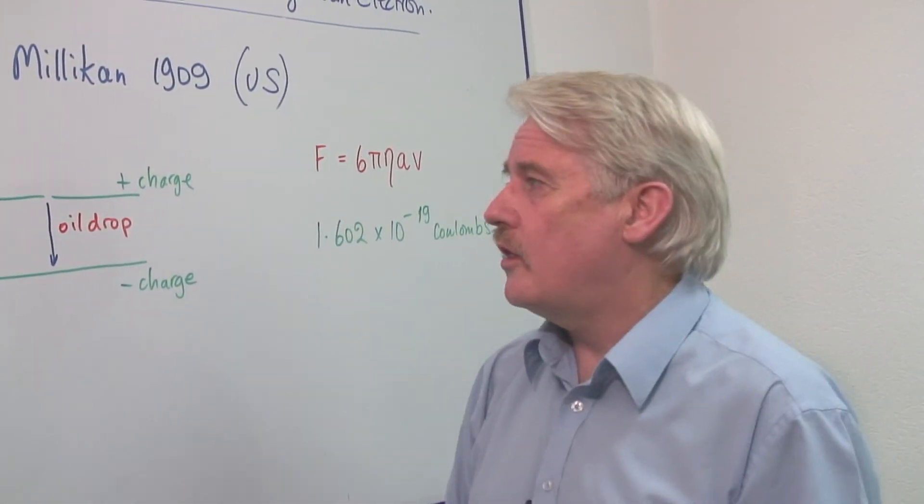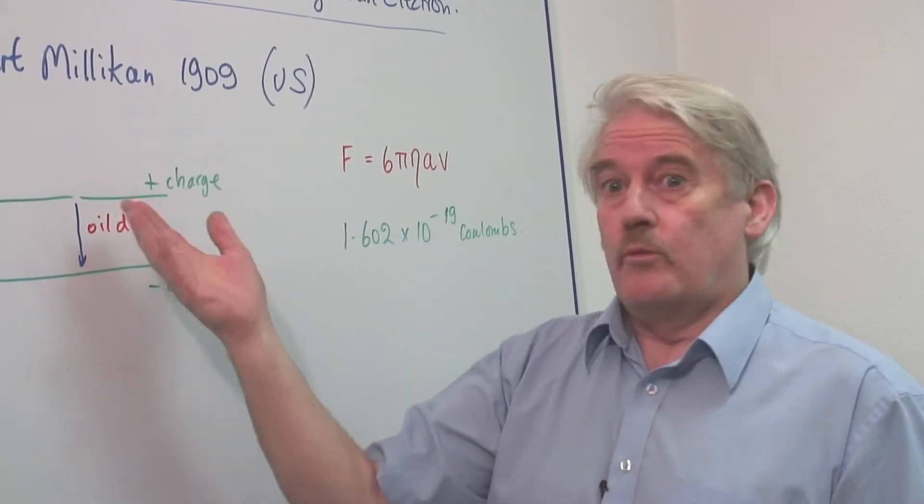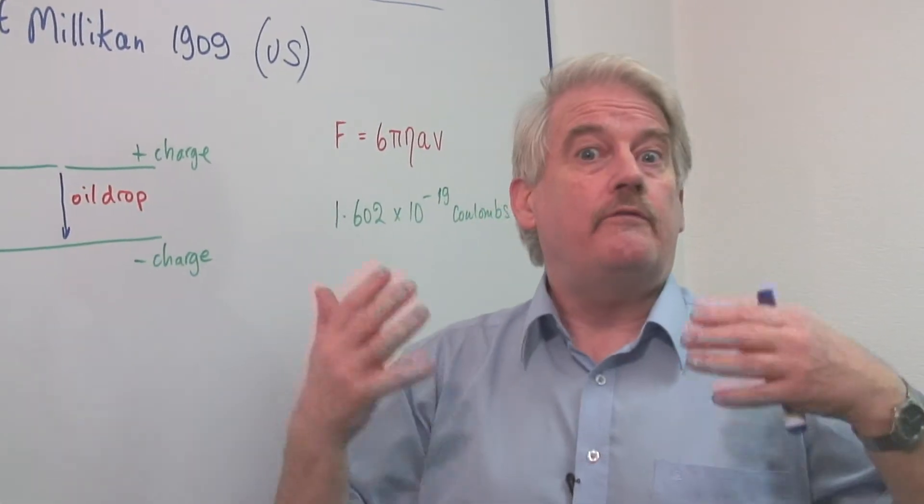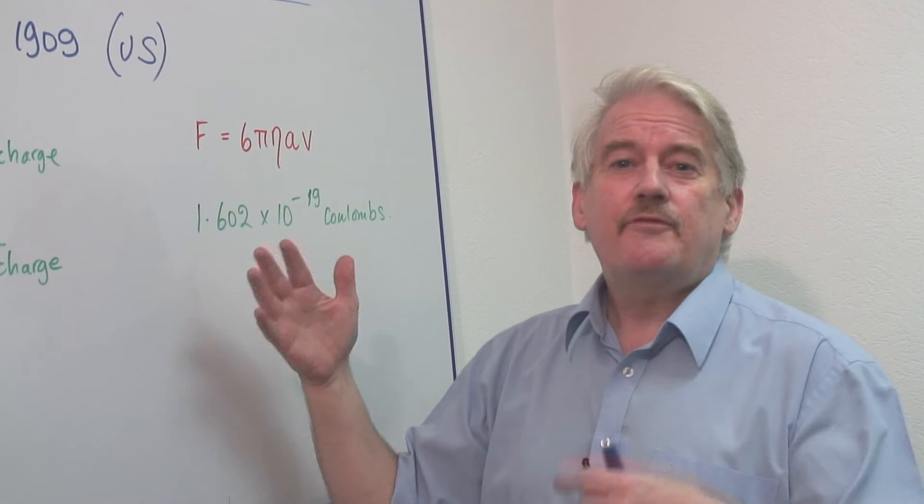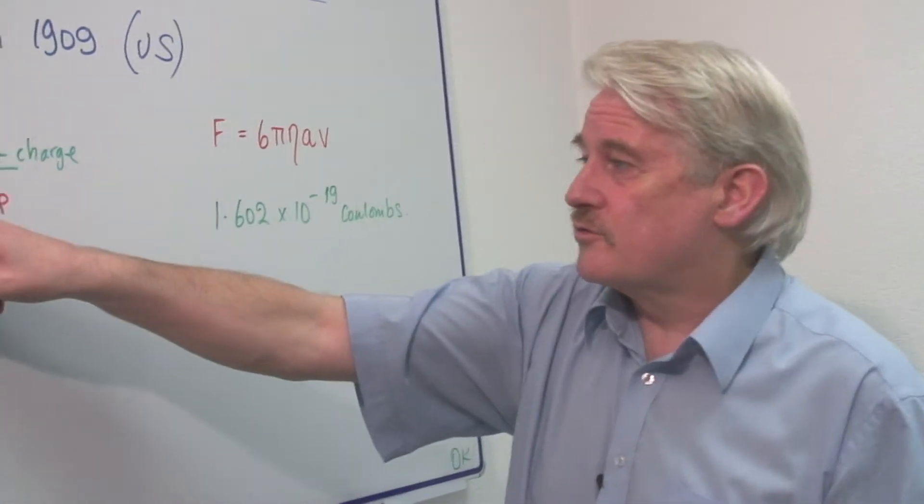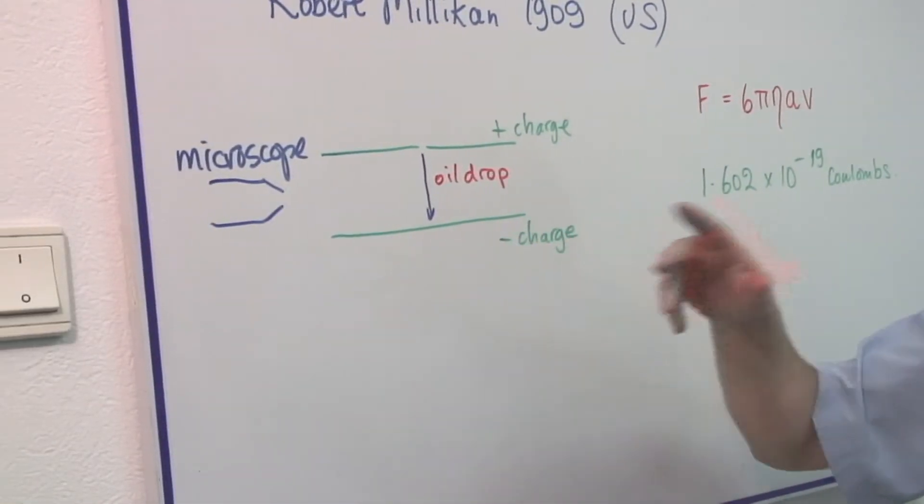Once you know the charge on the particle, well, you know it's a multiple of electronic charges. This is the fundamental. You can't have half of it. You can't have one and a half. So if you find that you get three on there, or five on there, or six on there, you'll find that it's all a combination of a number of these charges.